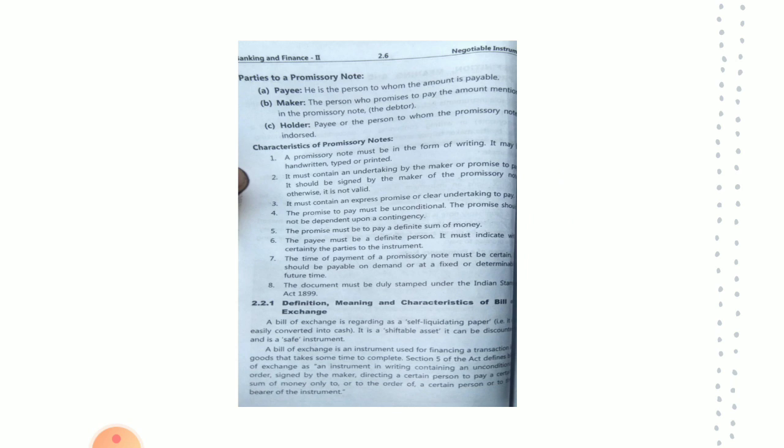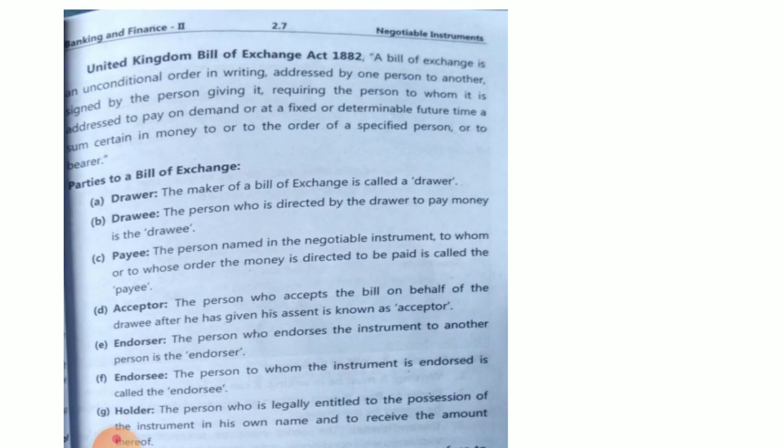A bill of exchange is an instrument in writing containing an unconditional order signed by the maker directing a certain person to pay a certain sum of money only to, or to the order of, a certain person, or to the bearer of the instrument. This is the definition given under the Negotiable Instruments Act, 1881.